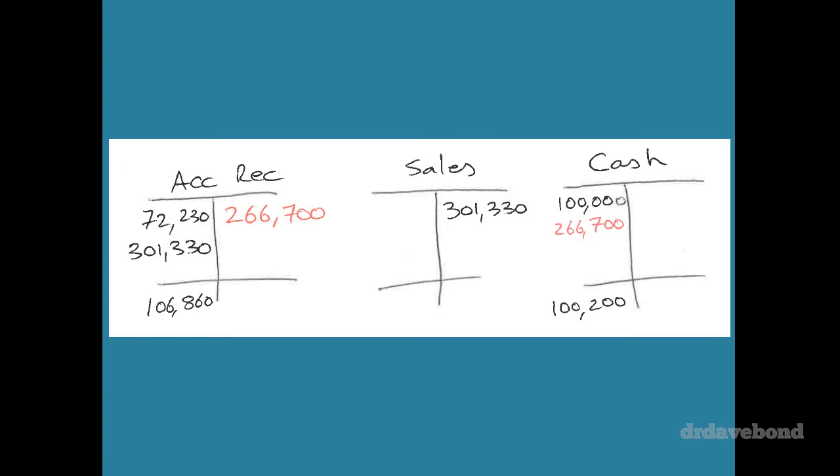So 72,230 plus 301,330 minus 106,860. How would you fancy that? 266,700.